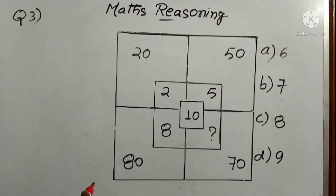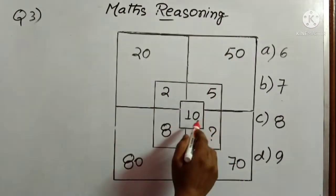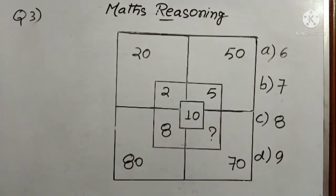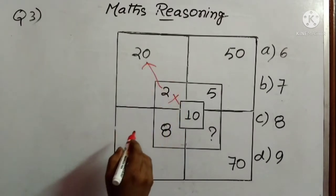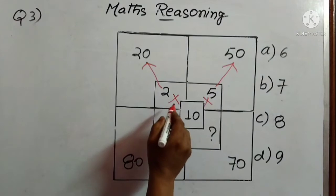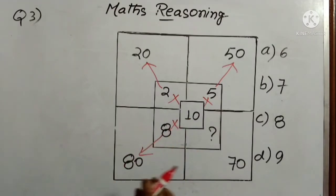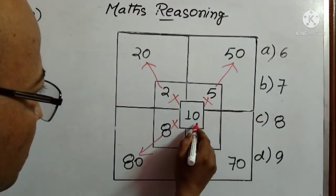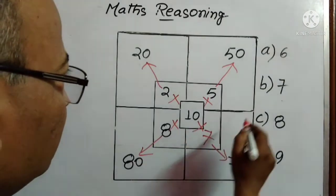Third question for today: we have to find out the suitable number from the 4 options. In this square we are getting 20, 50, 70, 80 and the values 8, 2, 5, 10 are in the middle. We need to find out the suitable missing number. See how we are getting 20: 2 × 10 = 20. So the pattern is to multiply by 10. 5 × 10 = 50, 8 × 10 = 80. So we need 10 × 7 = 70. So 7 is the answer, which is option B.